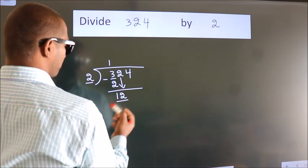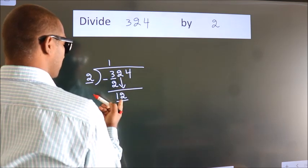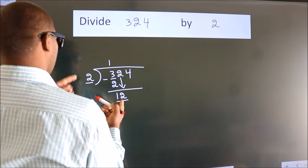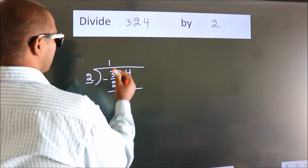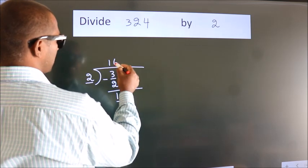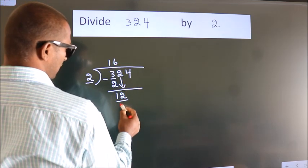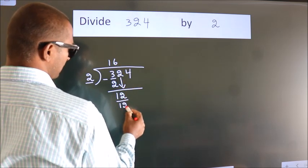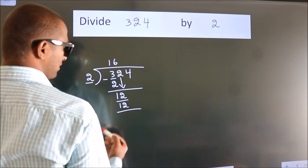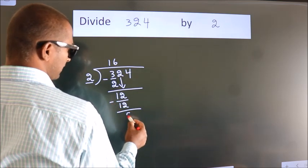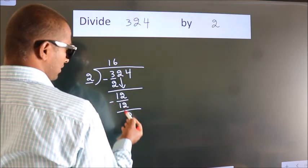So we have 12. When do we get 12 in the 2 times table? 2 times 6 is 12. Now we subtract. We get 0.